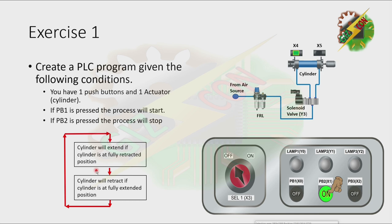When we press PB1, the cylinder will extend. And when it reaches the fully extended position, it will automatically retract. And if the cylinder reaches the fully retracted position, it will extend again. And the cycle will repeat. The only way to stop the cycle is by pressing PB2.